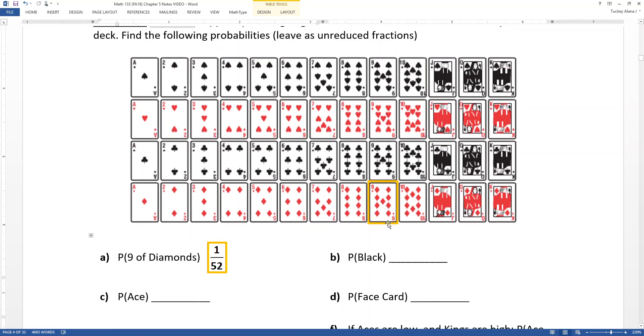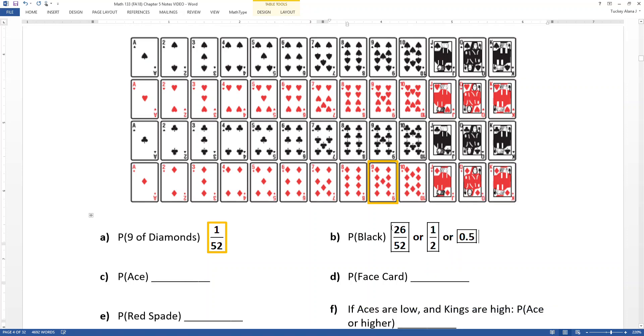Alright, so the nine of diamonds is 1 out of 52. Now the probability of black cards, the spade suit and the club suit are black. So that would mean there's 26 because 13 and 13 is 26. 26 out of 52, or in other words, it's a half, right? A half of the deck is black or 0.5 if you want to think of it that way, 50%. Any one of those would work.